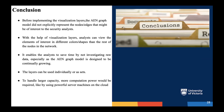As the conclusion, before implementing these visualization layers, the AEN graph model did not explicitly represent nodes and edges that might be of interest to security analysts. With the help of the visualization layers, analysts can view elements of interest in different colors, layers, shapes, and sizes compared to the rest of the nodes in the network. It enables analysts to save time by not investigating raw data, especially as the graph model is designed to be continually growing. The layers can be used individually or as sets, and to handle larger capacity, more computation power such as powerful server machines on the cloud would be required.